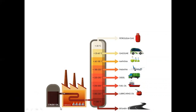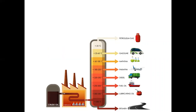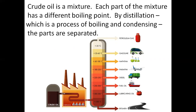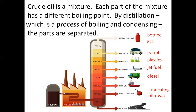Crude oil enters a distillation furnace. The column is hot at the bottom and cool at the top. Crude oil is a mixture, and each part of the mixture has a different boiling point. By distillation — a process of boiling and condensing — the parts are separated into bottle gas, petrol, naphtha (which is used to make plastics), jet fuel, diesel, lubricating oil and wax, and bitumen, which is used to make tarred roads.